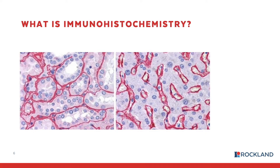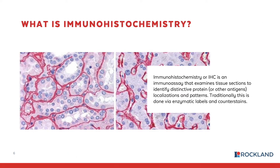So what is immunohistochemistry, or IHC? IHC is an immunoassay that examines tissue sections to identify distinctive proteins or other antigens, their localizations and patterns. Traditionally this is done by way of enzymatic labels and counter stains. For this section of the discussion we're going to talk about the enzymatic methods that correspond to IHC.